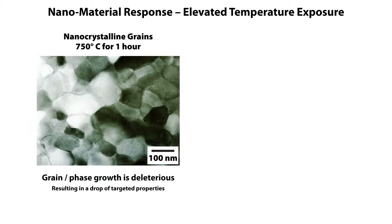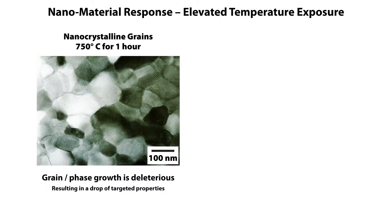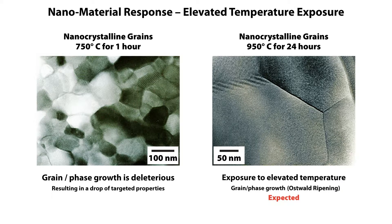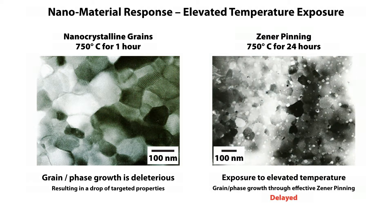What I show here is the expected response for existing nanomaterials. There's always a problem with grain growth. With existing nanomaterials, you can form nanocrystalline grains, but when exposed to elevated temperature, the grains grow, the phases grow, and you start losing your favorable properties. You can change the structure to put in effective zener pinning sites — in this case titanium carbide pinning — but you can only delay grain growth, you can't prevent it.